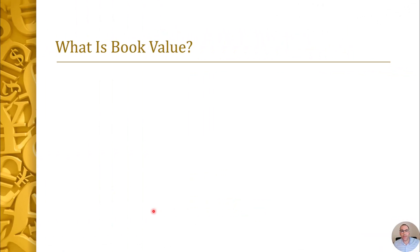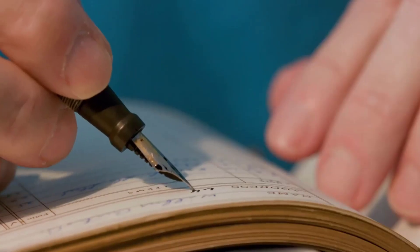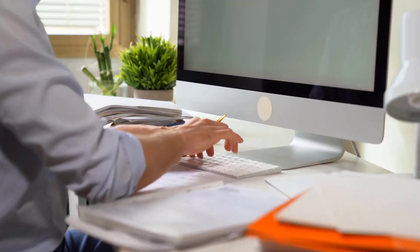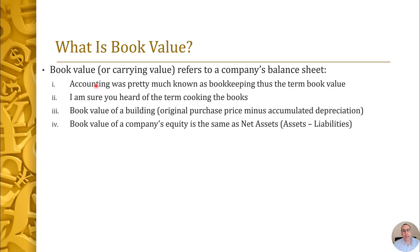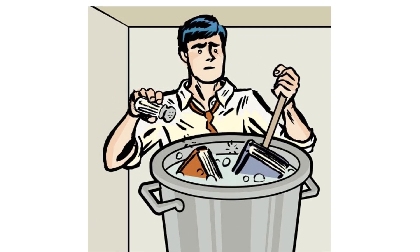The two numbers you need are the market value and the book value. Everybody knows what market value is because it's talked about all the time, but some people don't really understand what book value is or where to find it. When you hear book value or carrying value, that just refers to a company's balance sheet. A few decades ago accounting was just known as bookkeeping — that's why they call it book value, because the bookkeeper would keep track of physical books where each transaction was recorded. You've probably also heard the term 'cooking the books,' which means manipulating the financials to make them look better than they really are.